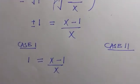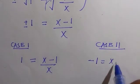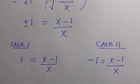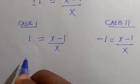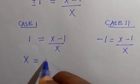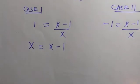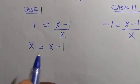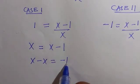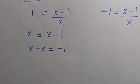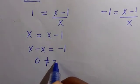For the first one, 1 equals (x minus 1) over x. When we cross multiply, we have x equals x minus 1. By taking x to the left hand side, we have x minus x equals minus 1. Therefore, 0 equals minus 1.